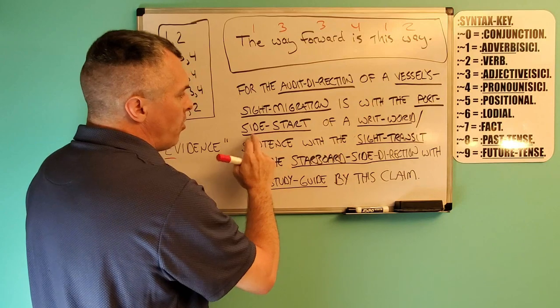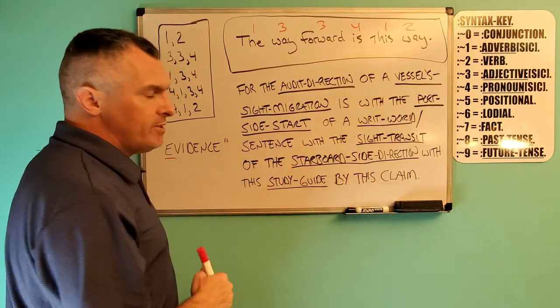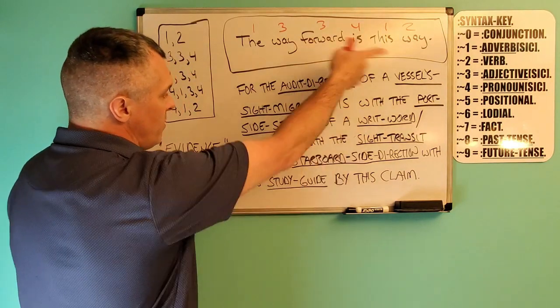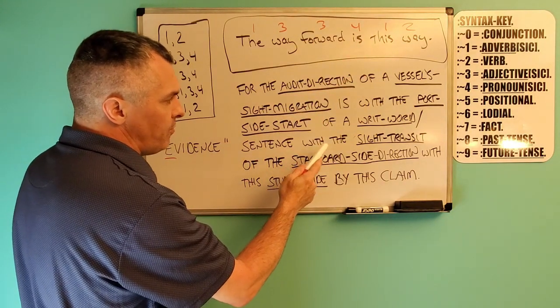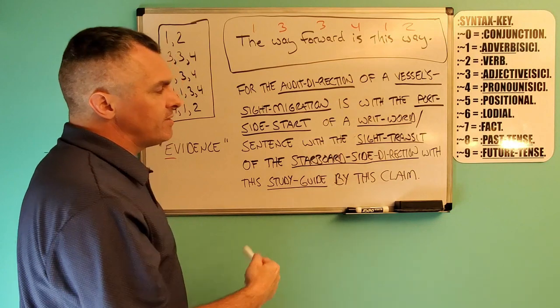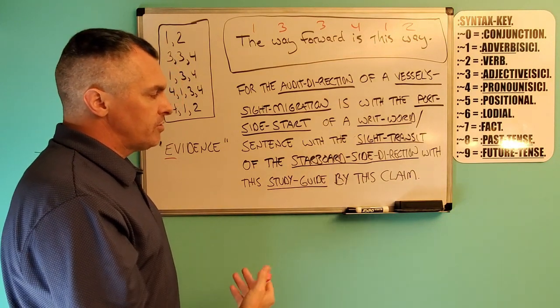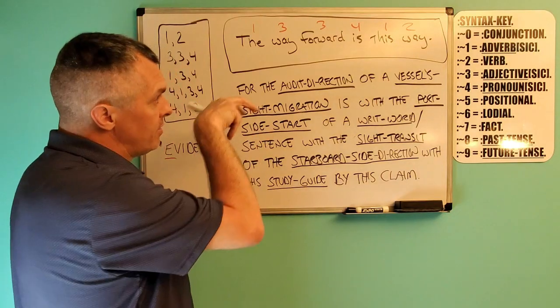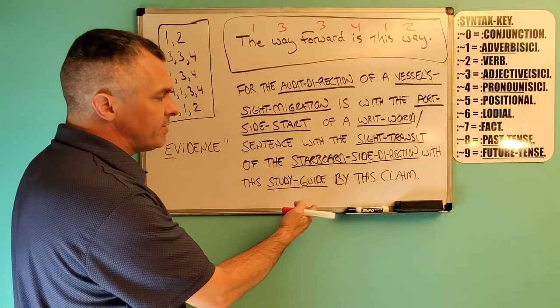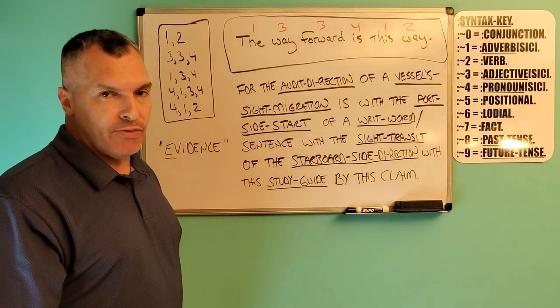which is with the port side start. Or what is the port side start concerned with? A writ word sentence. Another possessive with the site transit. What is the site transit concerned with? The starboard side direction of the site transit. What is it? With this study guide by this claim, which is the authority.